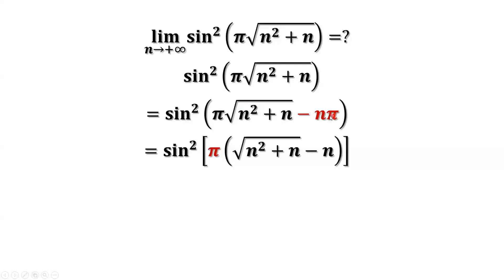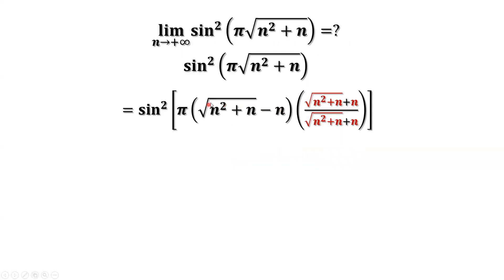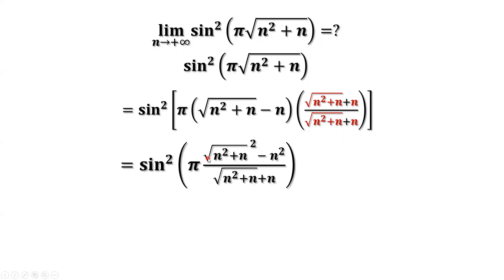We factor pi out, giving pi times square root of n squared plus n minus n. Then we multiply both numerator and denominator by square root of n squared plus n plus n to rationalize. This gives us, in the numerator: square root of n squared plus n squared minus n squared, which is n, times pi.